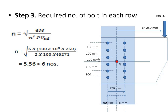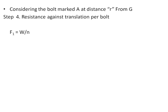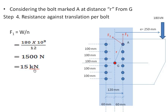So we place 6 bolts in each row — 6 here and 6 here — with 100 mm spacing parallel to the load direction. Step 4: we consider the bolt marked A at a radial distance r from the CG. We calculate f1, the resistance to direct load, which is f1 = W/n = 180/12 = 15 kN per bolt.